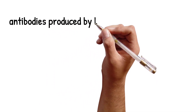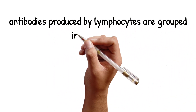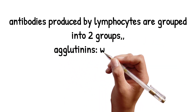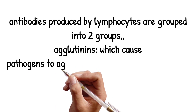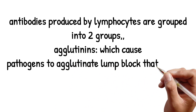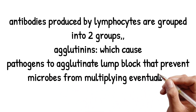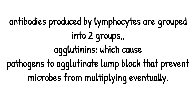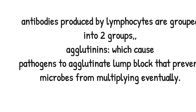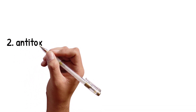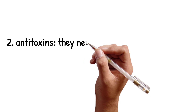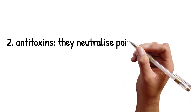The antibodies produced by the lymphocytes are grouped into two groups: agglutinins and antitoxins. Agglutinins cause microbes to agglutinate, clumping together, which prevents microbes from multiplying. Antitoxins neutralize the poisons produced by the microbes and other organelles.